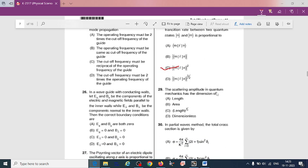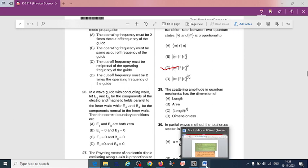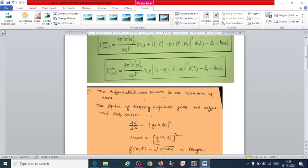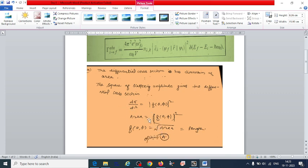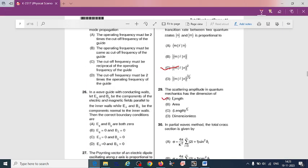Next question: The scattering amplitude in quantum mechanics has the dimension of... So scattering amplitude formula, as we know, differential cross section has the dimension of area. So the square of scattering amplitude gives the differential cross section. Then if we remove square root of area, that is equal to length. So square of length is area, then option A is correct.